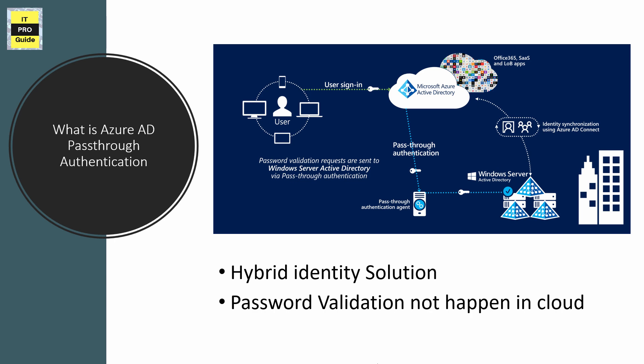Azure AD pass-through authentication provides simple password validation for authentication services. You install a service agent in your on-premises environment — it can be an Active Directory server or any other server. Whenever your cloud application requests authentication, Azure AD validates it from the on-premises Active Directory. Organizations with strict password policies can choose this hybrid identity solution because the password validation does not happen in the cloud.